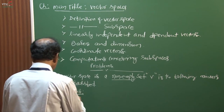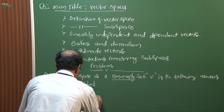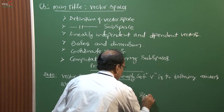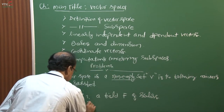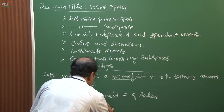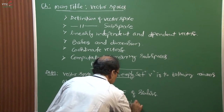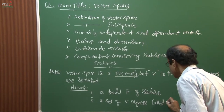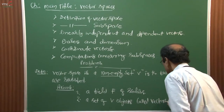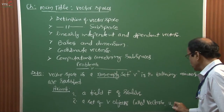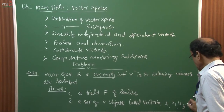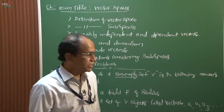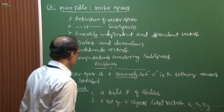The first axiom is a field of scalars. The second axiom is a set V of objects called vectors. Vectors can be taken as U1, U2, U3, and so on. Different authors will use different notations to represent these vectors.